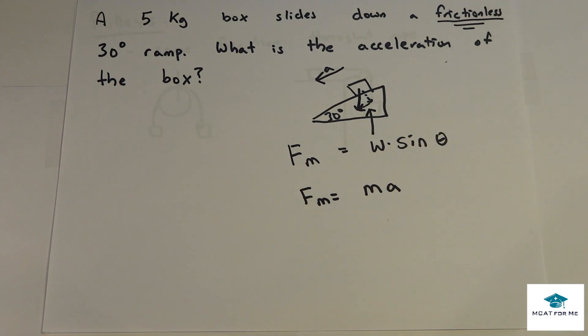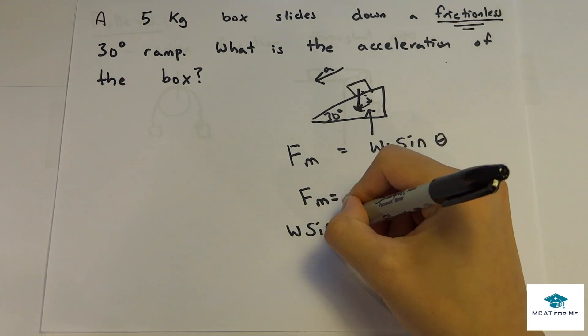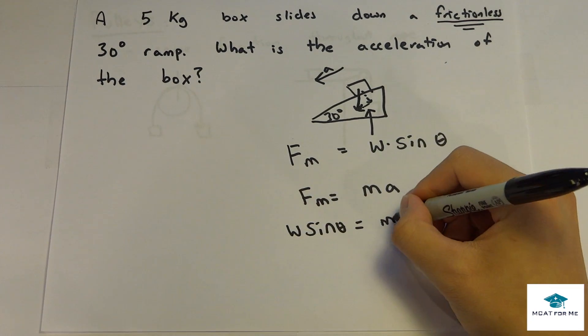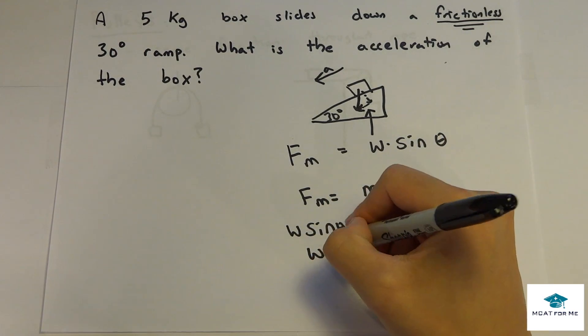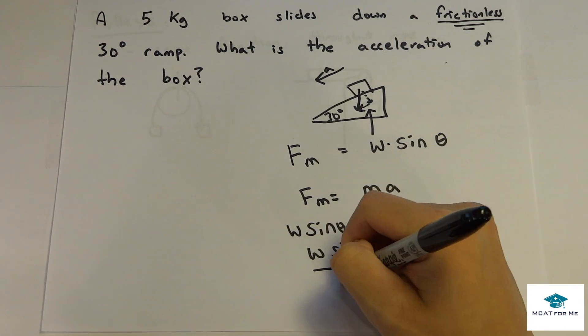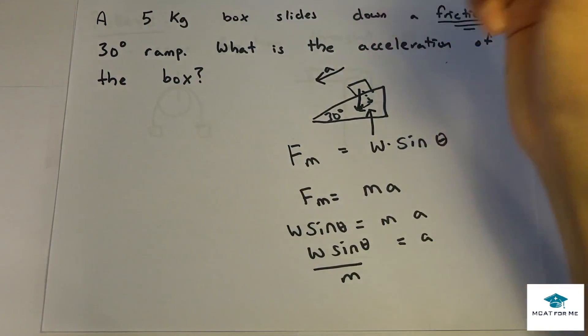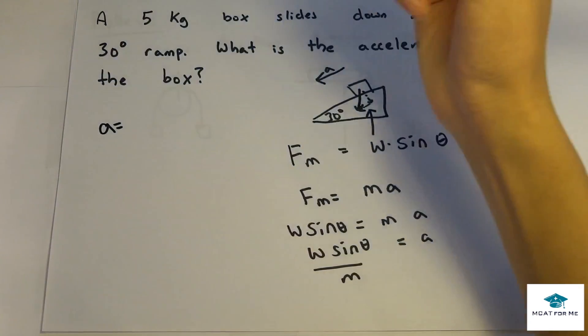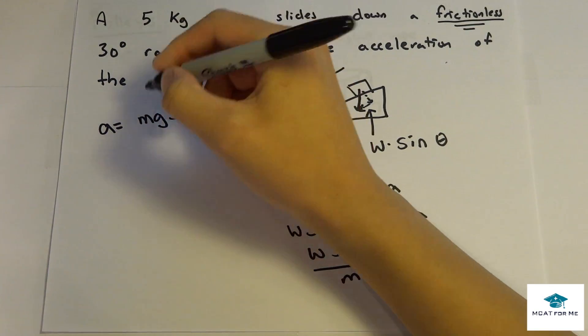And so this equals the acceleration, so mass times acceleration, by Newton's second law. So we plug this in, weight times sine theta equals mass times acceleration, and acceleration equals w sine theta over the mass. And remember before, weight equals mg, so I'll write it up here, a equals mg sine theta over m.